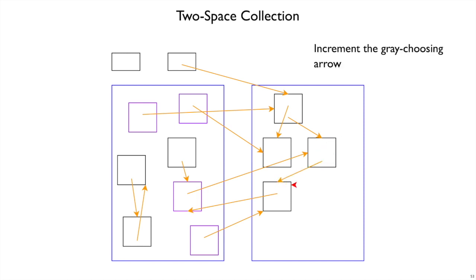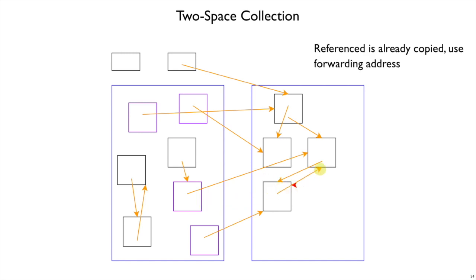We're done with that object, so we consider the last one. It has one outgoing orange edge, but it points to a purple box — an object we've already moved. Because we left a forwarding pointer there, we know where that object moved. So instead of copying this box again, we see the forwarding pointer and just update the orange arrow to point to the existing copy. This corresponds to discovering an already gray or black object and not trying to repaint it gray — we just leave it alone.